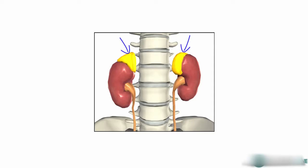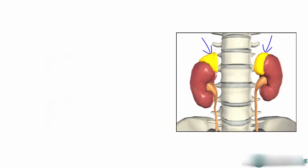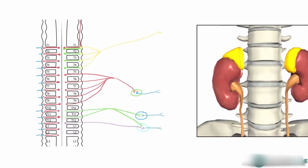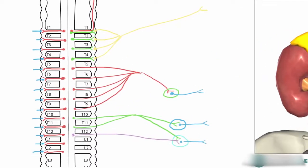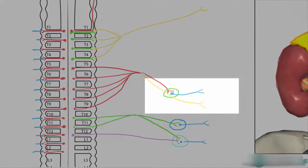The adrenal medulla of the adrenal gland is special, because the preganglionic fibres directly innervate it. The adrenal medulla itself is like a ganglion, so the preganglionic fibres pass directly through the celiac ganglion without forming any synapse, and then these fibres are in direct contact with the chromaffin medullary cells.